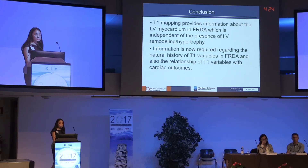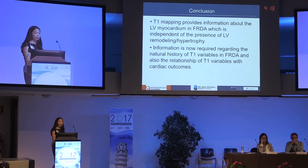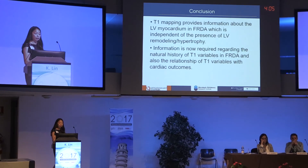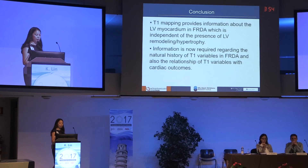In conclusion, T1 mapping provides information about the LV myocardium in Friedreich's ataxia that appears to be independent of the presence of left ventricular remodeling and hypertrophy. Structural changes detectable in about half of patients are not the only predictors of what T1 mapping variables show. We now need information about the natural history of how T1 mapping variables evolve over time, and more importantly, their relationship to meaningful cardiac outcomes.